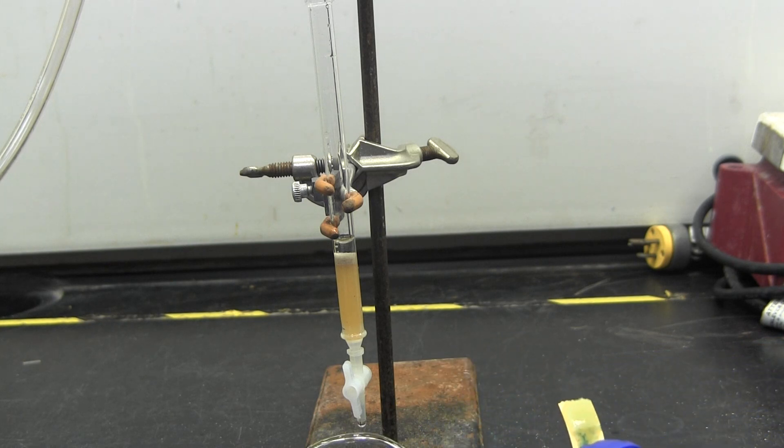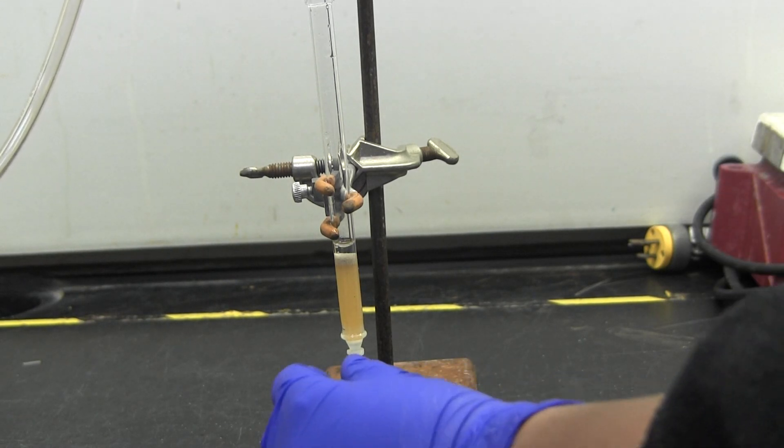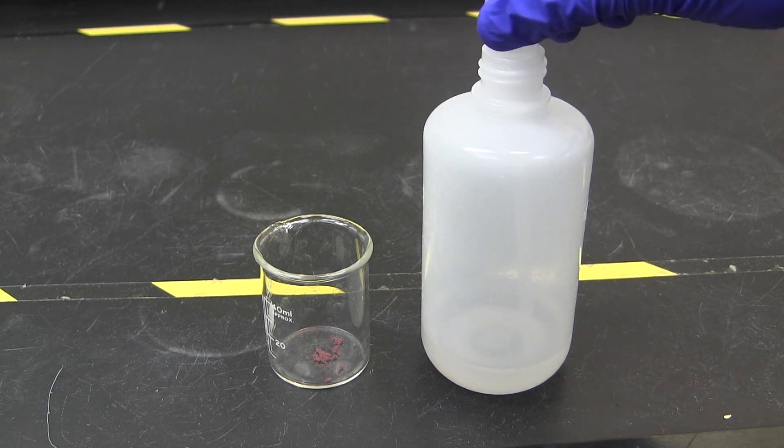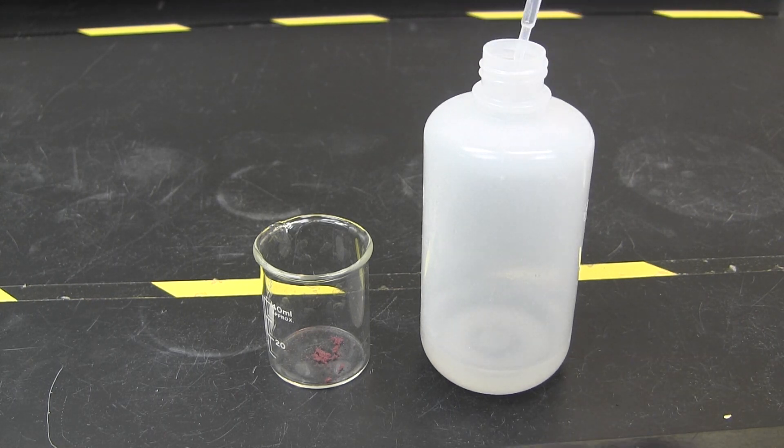Check the pH of your elutin once you have run the water twice. If the elutin is not neutral, run another column full of water and check again. Once the pH is neutral, lower the liquid in the column down to the sand.